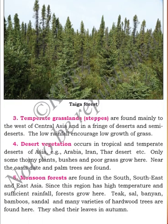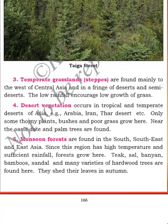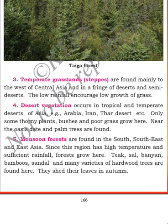Next comes the desert vegetation, which includes the tropical and temperate deserts of Asia. Examples include the deserts of Arabia and Iran. Some plants like cacti, aloe vera, bushes, and poor grass grow here. Palm trees are also found in these areas.